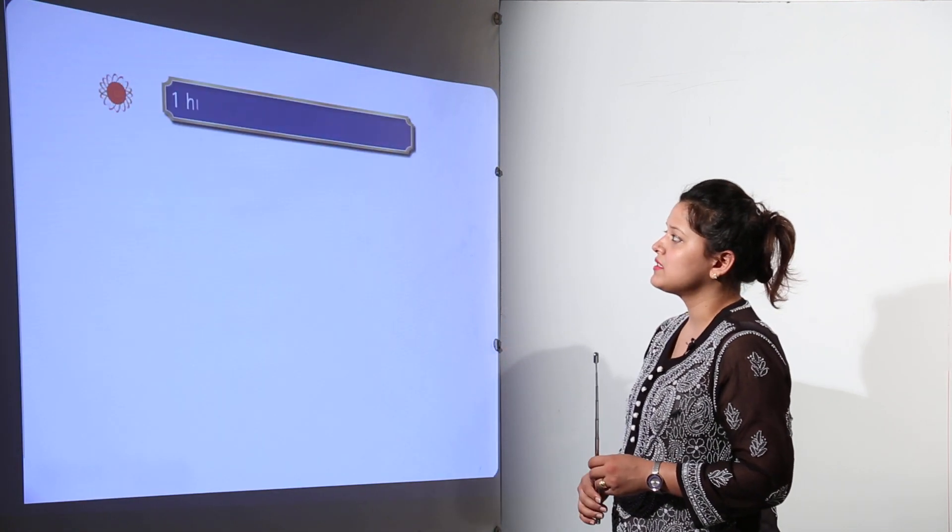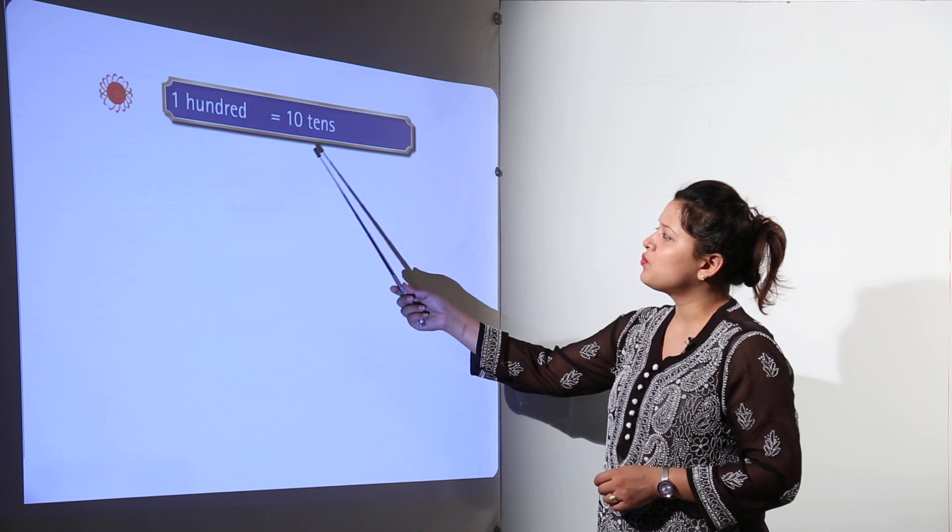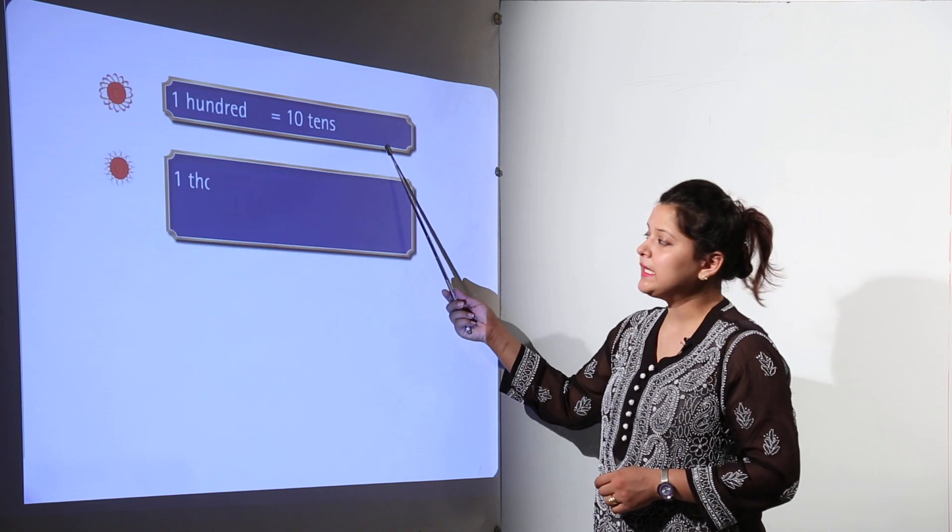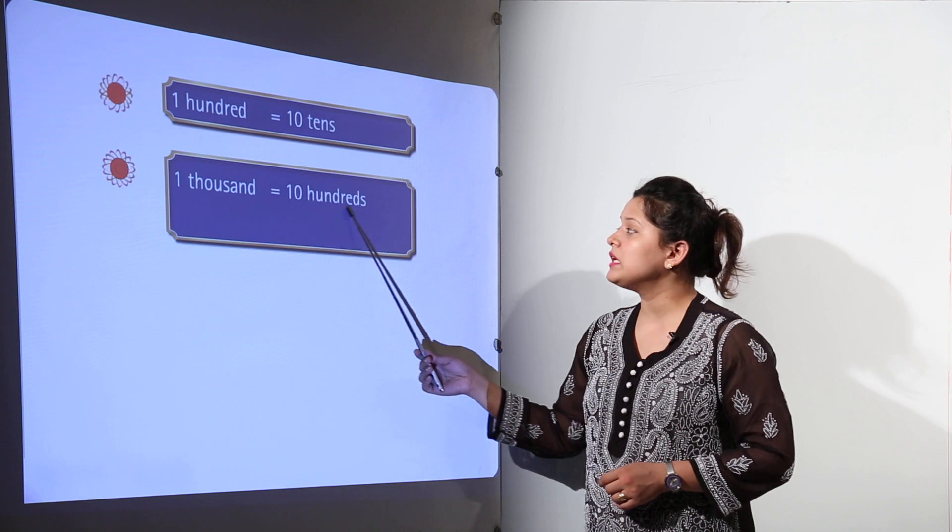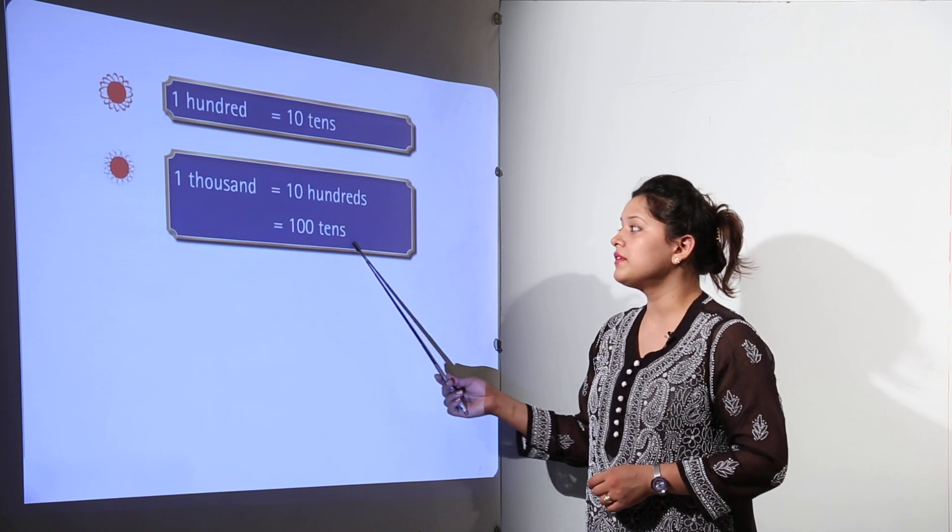Now large numbers in practice. We know that one hundred is equal to ten tens. One thousand can be written equal to ten hundreds or hundred tens.